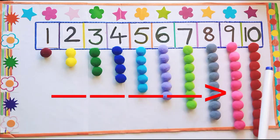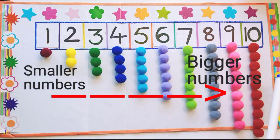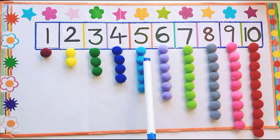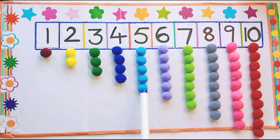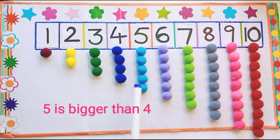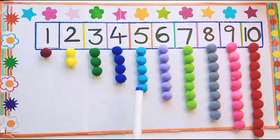When we move forward in the number line we get bigger numbers. Now see children, how many pom-poms are here? Count: one, two, three, four, five. After four pom-poms we have one more pom-pom in the number five. So five is the bigger number when comparing with four.